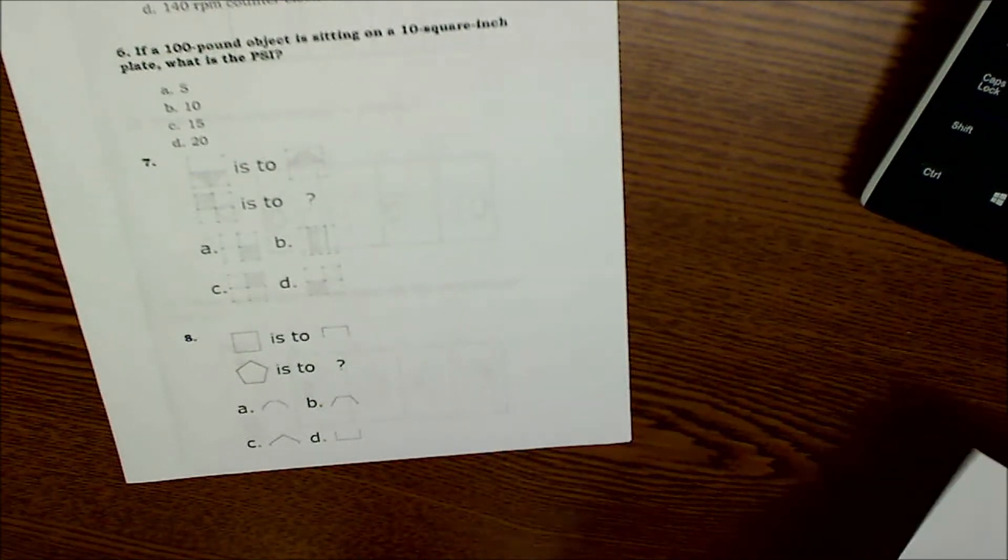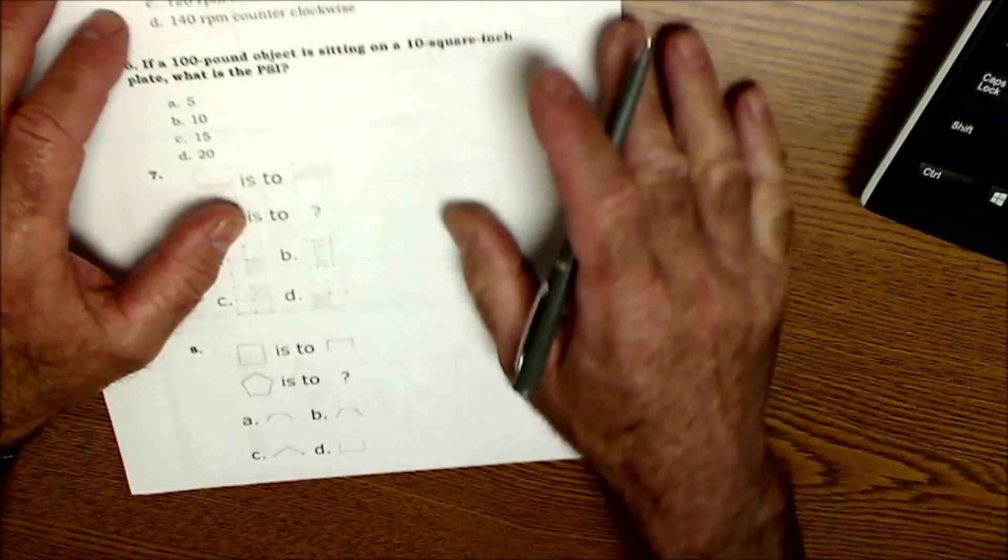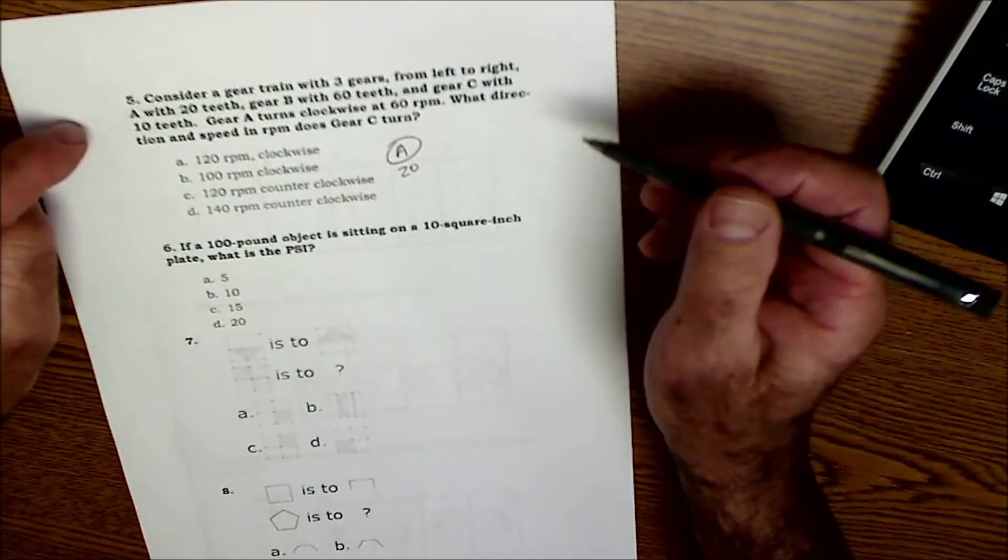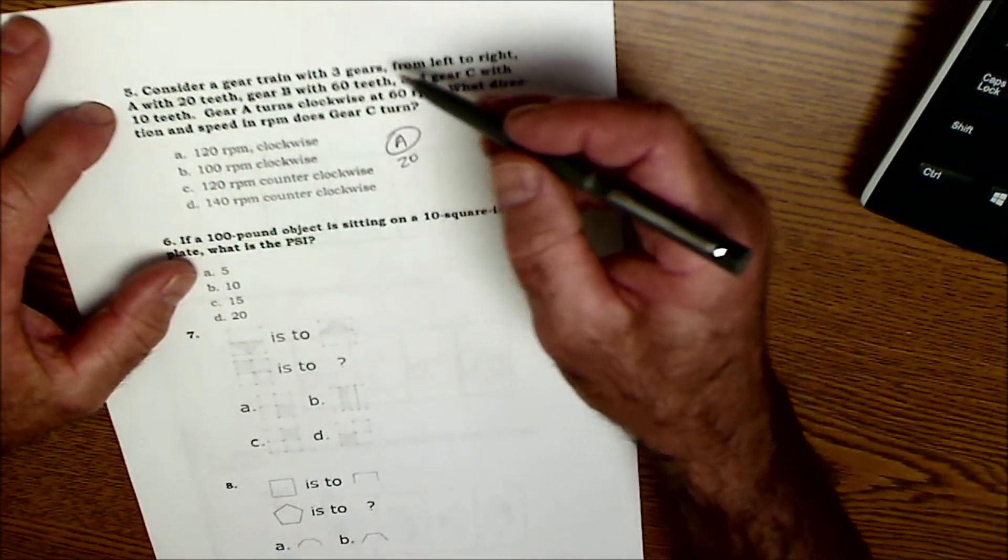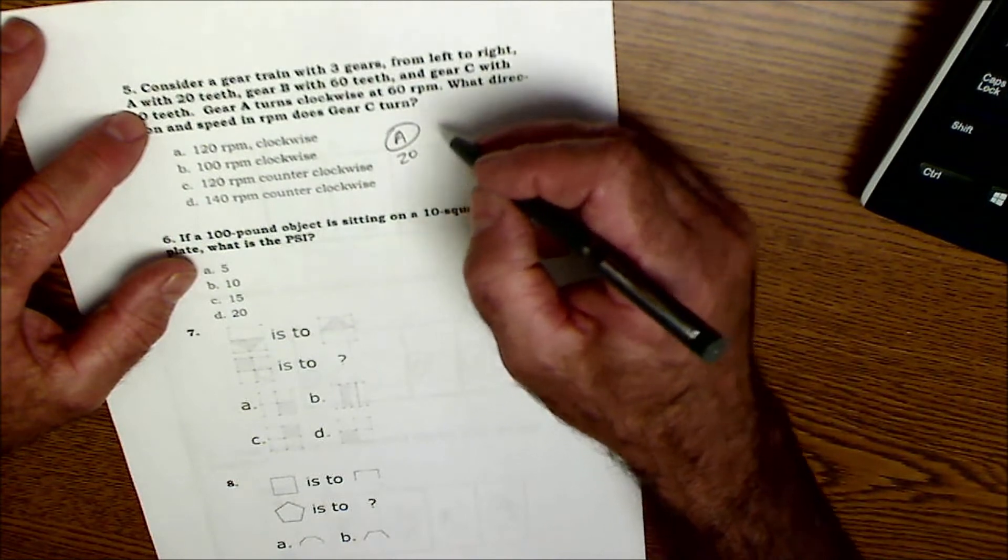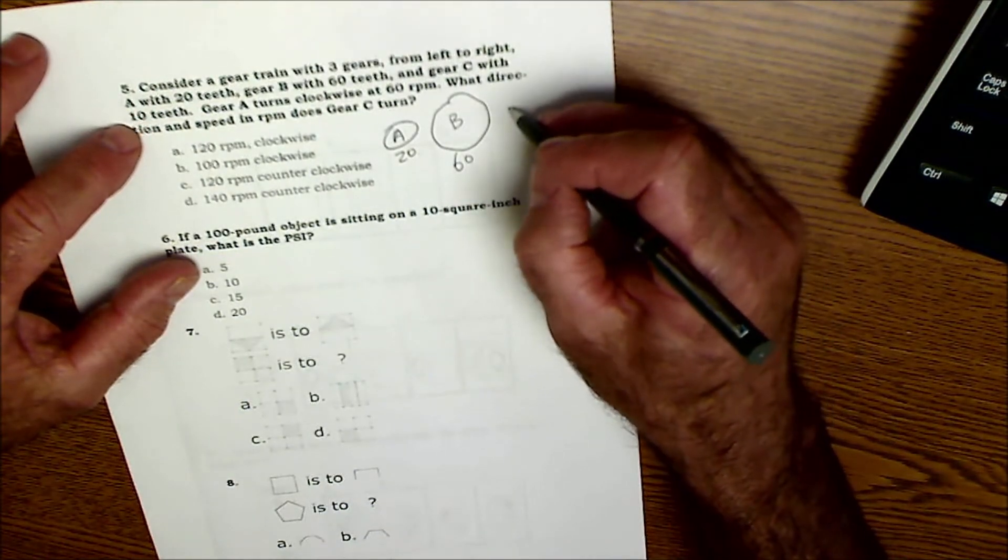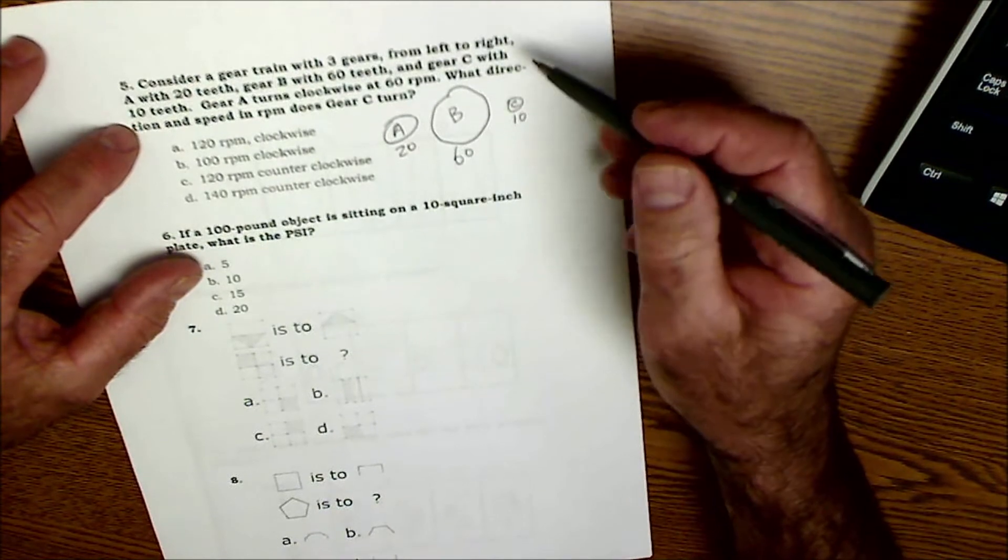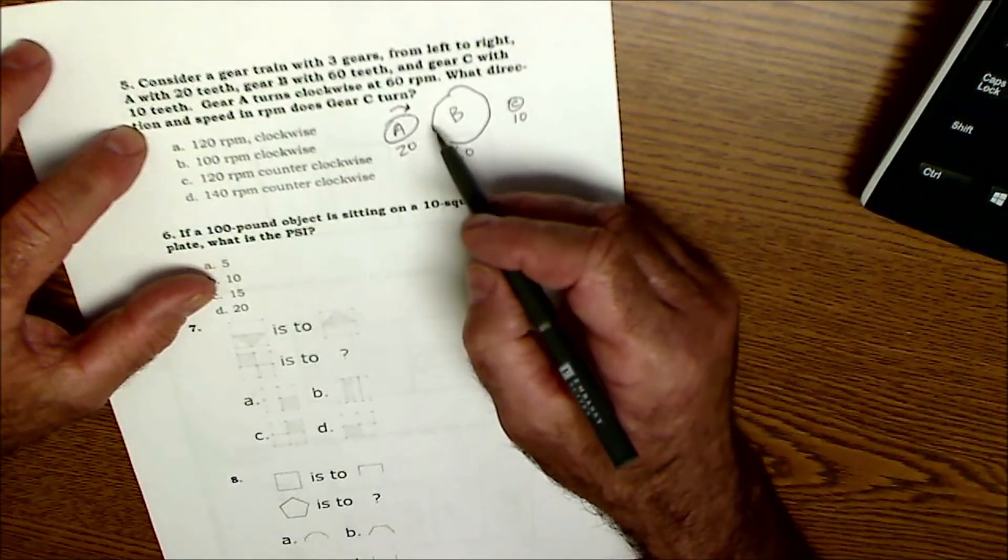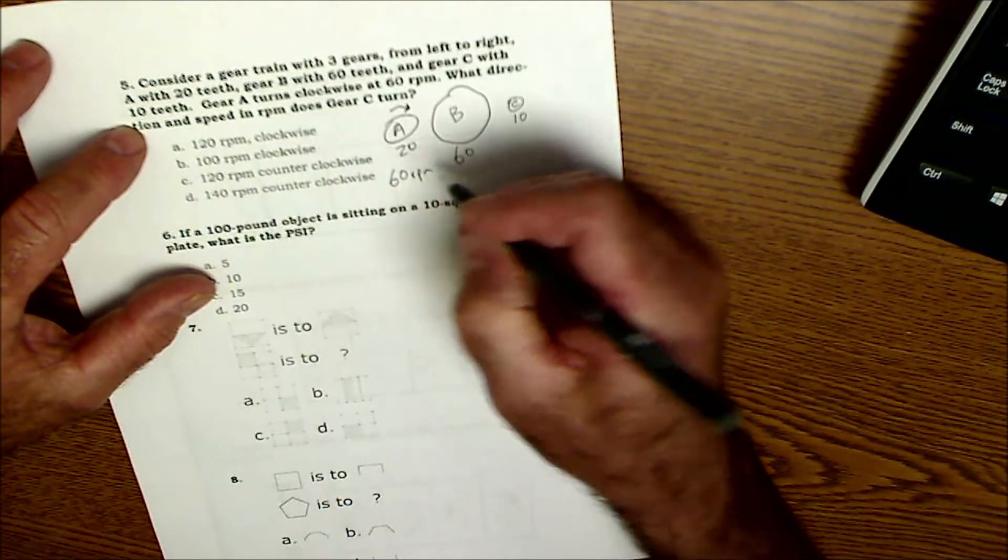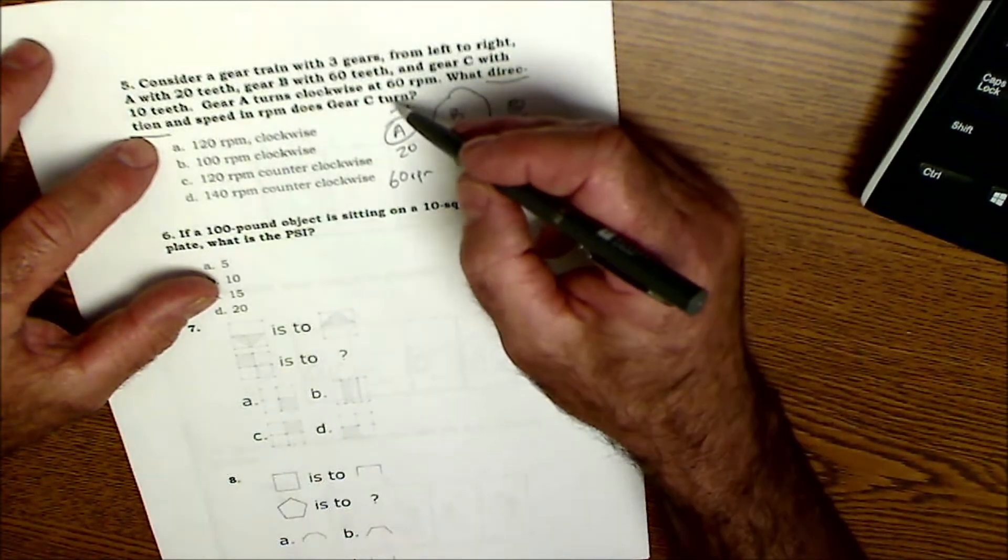Consider a gear train with three gears from left to right. A has 20 teeth. So A is going to be 20 teeth. Again, all I'm going to do - go ahead and pause the video and then do problem number five, and then I'll run through it. First thing I'm going to do is draw out a picture. A gear train with three gears from left to right, A has 20 teeth. B has 60 teeth, so a 3 to 1 ratio. And C has 10 teeth, so it's a small gear here. Gear A turns clockwise, so it's going clockwise. Again, transferring that information to my picture at 60 RPM, angular velocity.